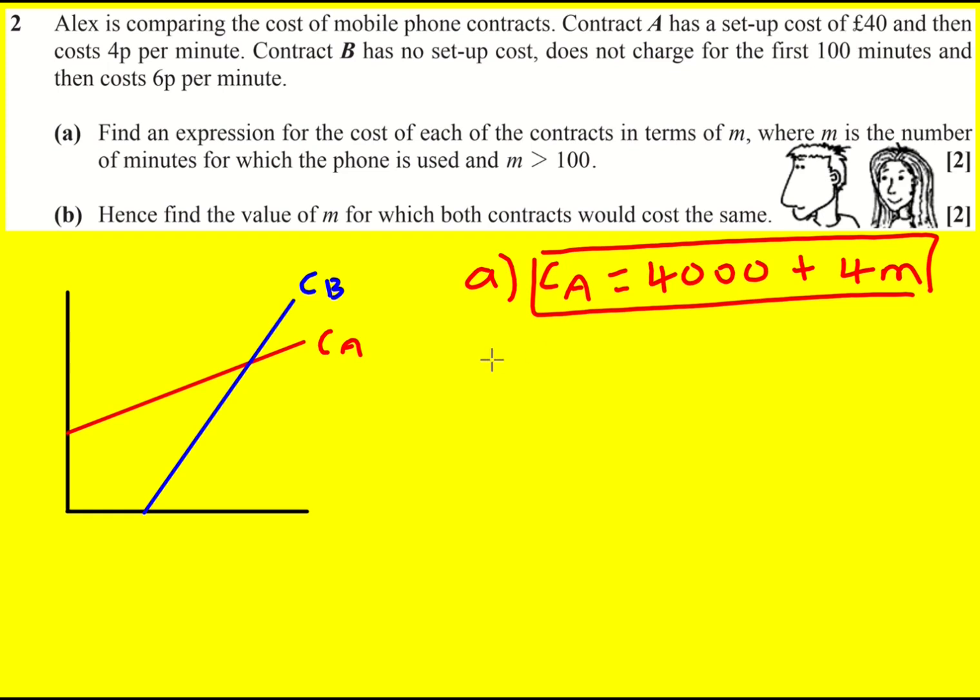All right contract B is a little bit more, well aspects of it are more complicated. There's no setup cost so that makes it simpler but now it's 6p per minute but after the first hundred minutes, so it's going to be six and then it's like we've done a translation or equivalently, basically the zero starts at 100. So it's going to be M minus 100 because then after the hundred and first minute that's when it's going to cost six p. So that's probably the trickiest bit of this question I think.